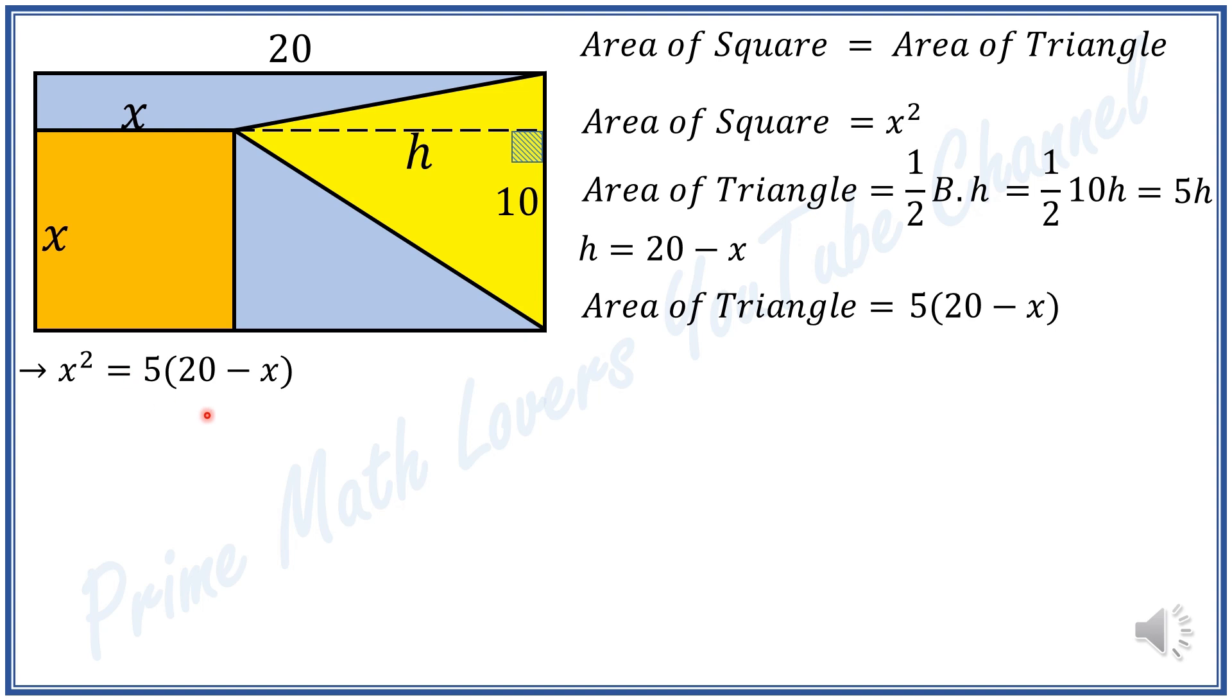Distributing 5, we get x squared equals 100 minus 5x. Rearranging yields x squared plus 5x minus 100 equals 0. This is a quadratic equation.